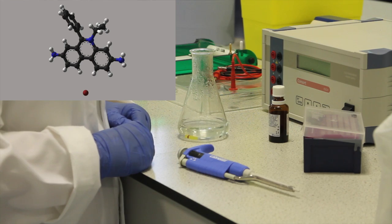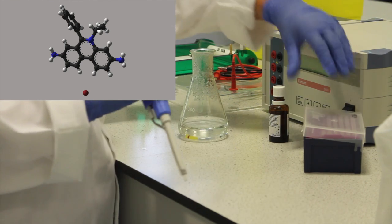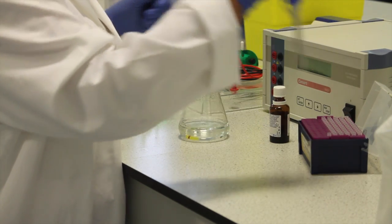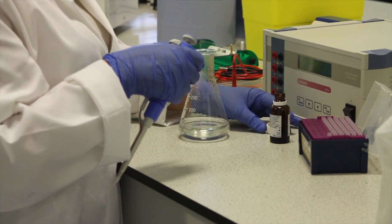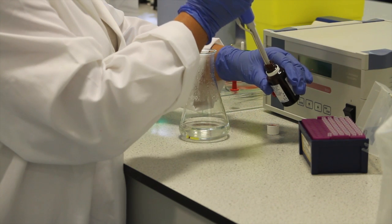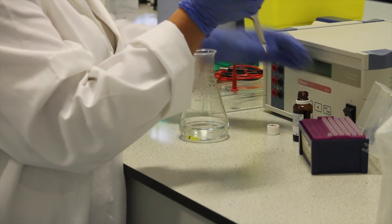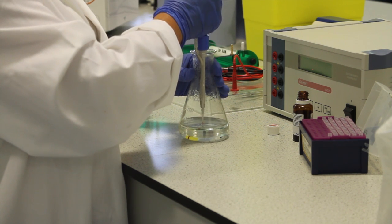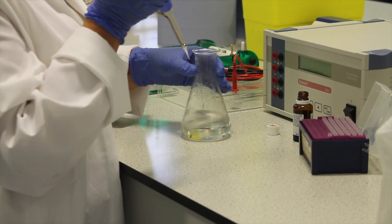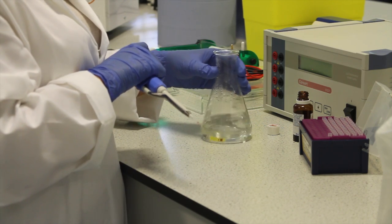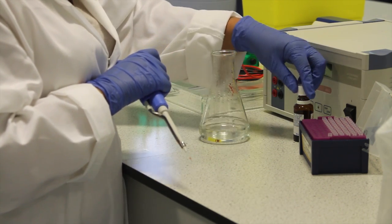Once the gel is cooled, ethidium bromide is added to the gel. Carefully add the ethidium bromide to the cooling agarose solution and swirl to mix. This is a carcinogen so immediately dispose of the tip in the sharps bin. Ethidium bromide will intercalate between the DNA and can be visualized under UV illumination, therefore allowing the DNA bands to be visualized after the gel has been run.